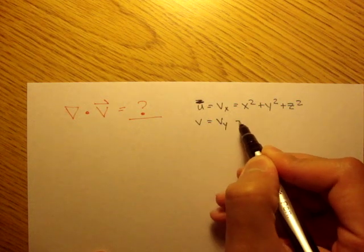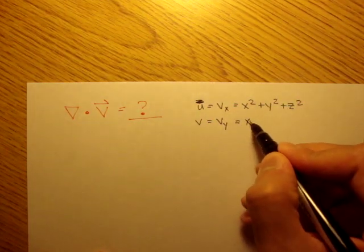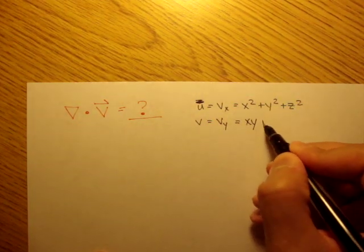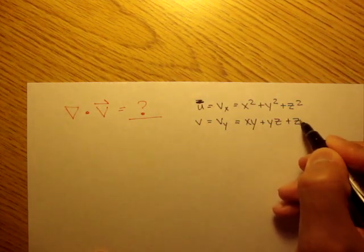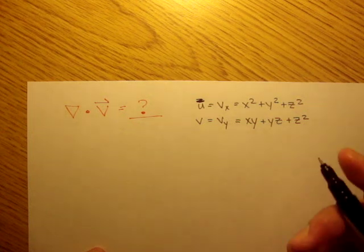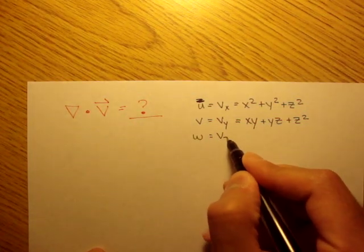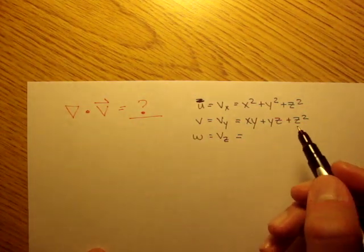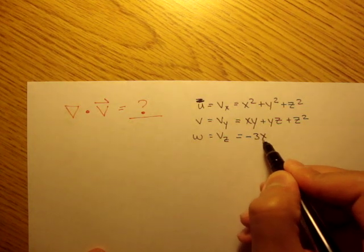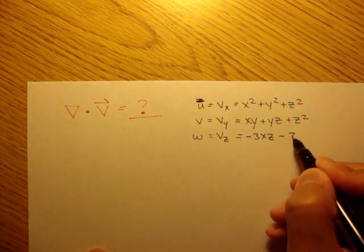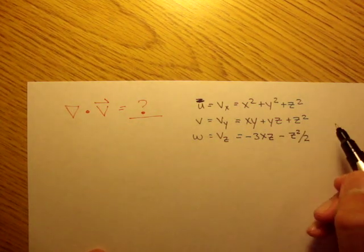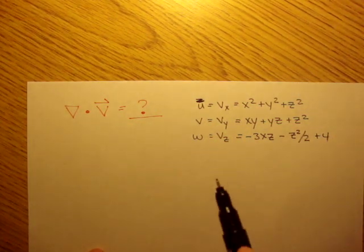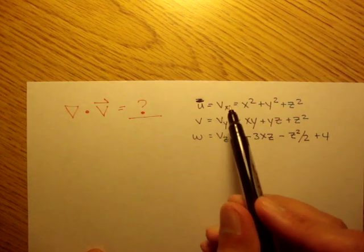V of y is equal to xy plus yz plus z squared. And w is equal to v of z, and that's equal to negative 3xz minus z squared divided by 2 plus 4. So the three components of a velocity field are given.